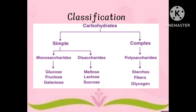Carbohydrates are classified into simple carbohydrates and complex carbohydrates. Based on chemical composition, simple carbohydrates are classified into monosaccharides and disaccharides. Complex carbohydrates are polysaccharides. Monosaccharides are glucose, fructose, and galactose. Disaccharides are maltose, lactose, and sucrose. Polysaccharides are starch, fibers, and glycogen.